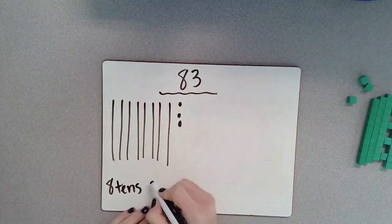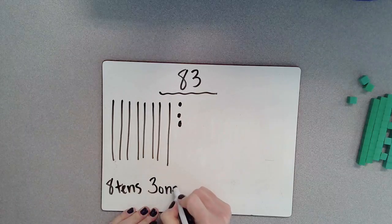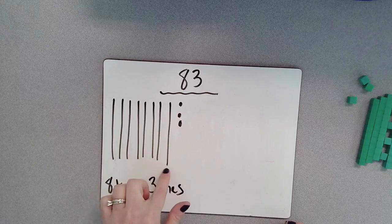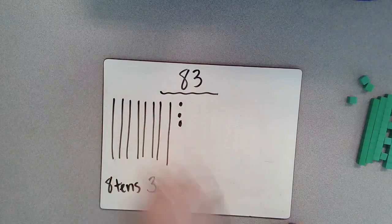One, two, three, which would give us 83. Because I have 10, 20, 30, 40, 50, 60, 70, 80, 81, 82, 83.